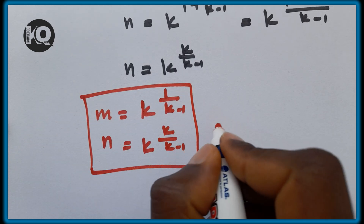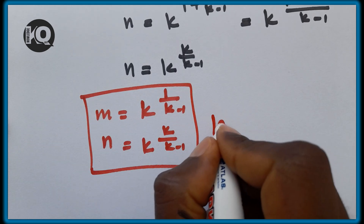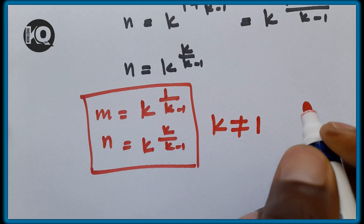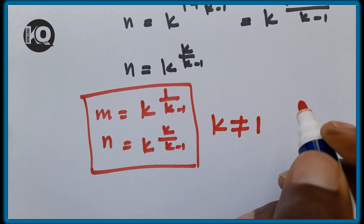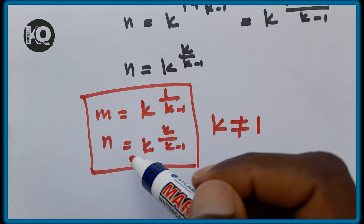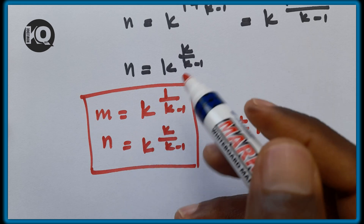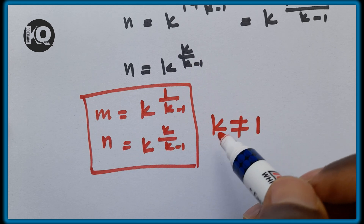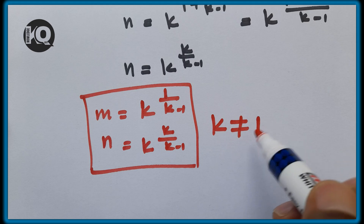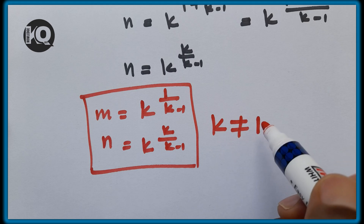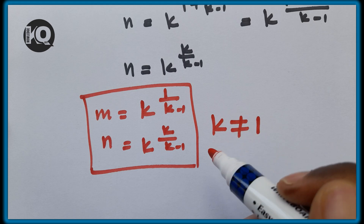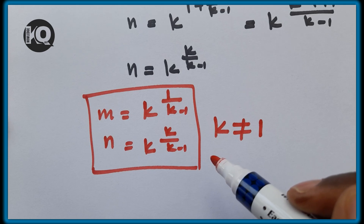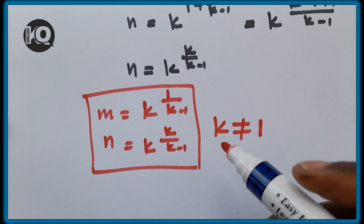K must be different from 1. To find numerical values of m and n, substitute any value of k ≠ 1 and verify the solution. Thank you very much for watching — have a nice time, bye bye.